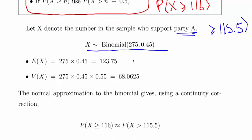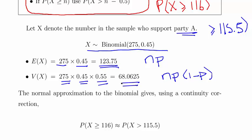To calculate the mean and the variance which we're going to need, we use NP, 275 times 0.45, which gives us 123.75, and then the variance which is N times P times 1 minus P, which is 275 times 0.45 times 0.55, which gives us 68.0625.